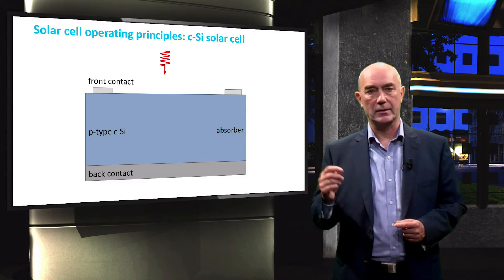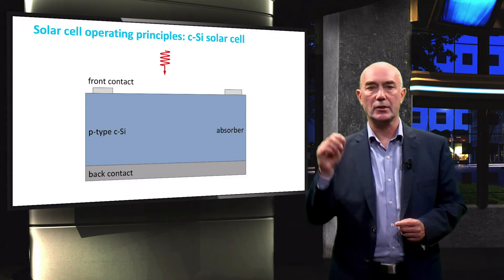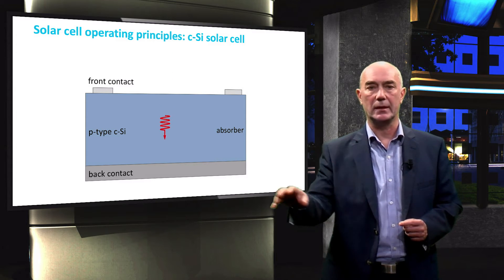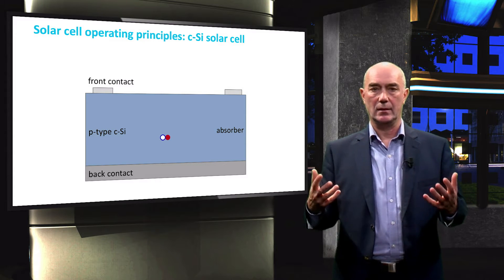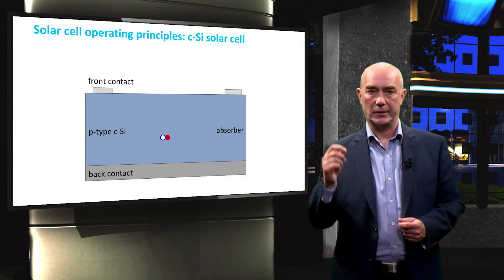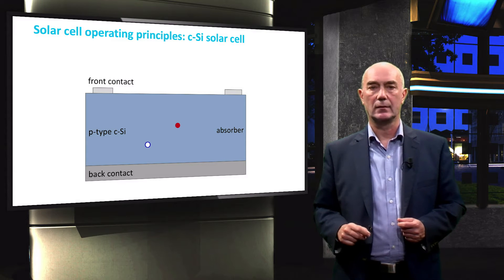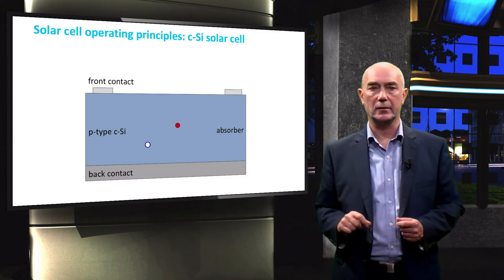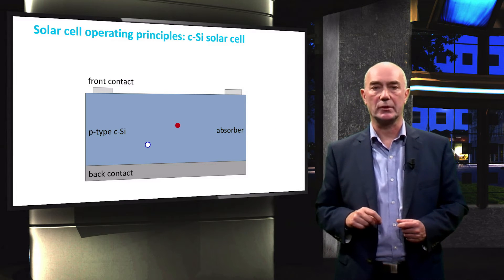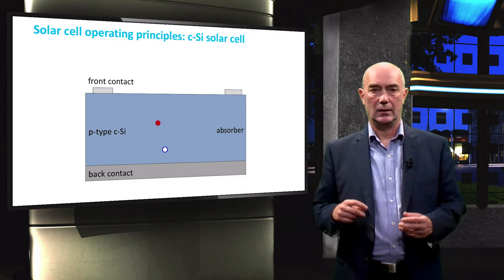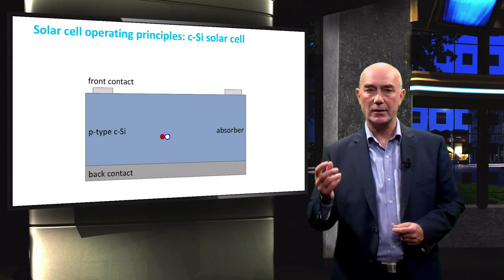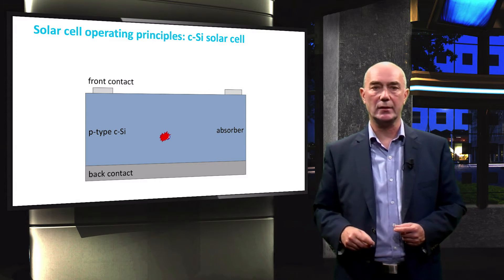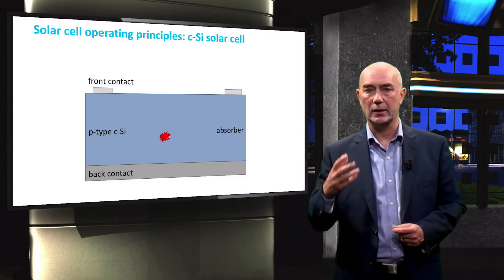However, this does not happen in reality. When light shines on P-type crystalline silicon, it is indeed absorbed by the wafer and we do get an electron-hole pair. What happens in reality is that both the electron and the hole will wander throughout the material randomly because of thermal motion. There is a high chance that the electron meets the hole and they annihilate each other — or, as we say, they recombine.